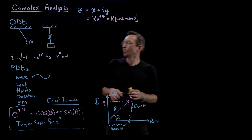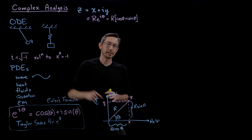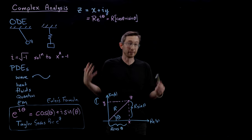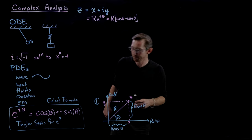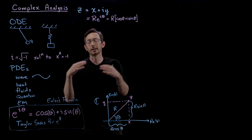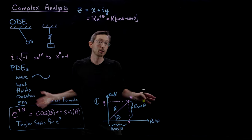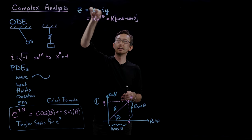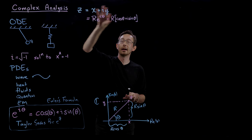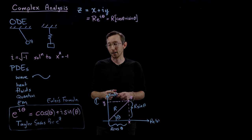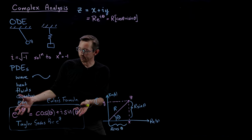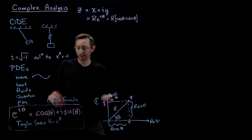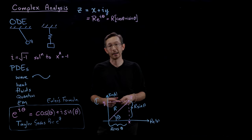Welcome back. We're talking about complex analysis, which is the study of complex numbers, complex variables, and functions of these complex variables. One of the most important properties of all complex numbers is the relationship between the Cartesian form and the polar form of a complex number, which is very elegantly represented by Euler's formula: e to the i theta equals cosine theta plus i sine of theta.